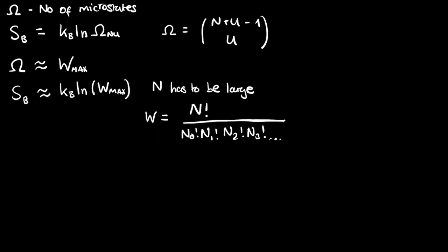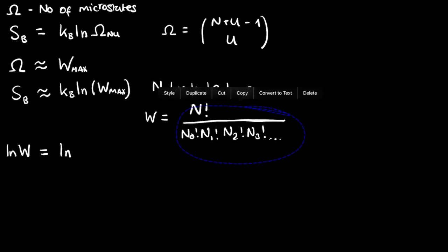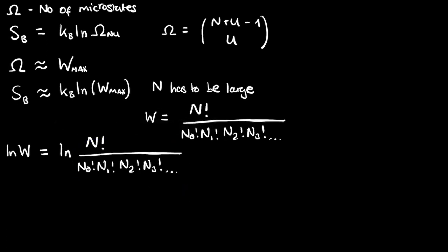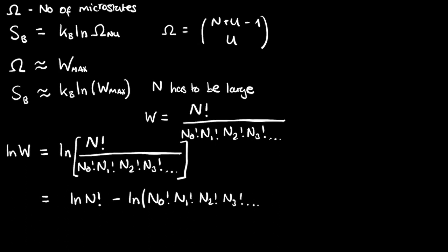So why not substitute our formula for W into the Boltzmann formula? I'm going to forget about the Boltzmann constant for now and simply take the log of W. I'll sub it back in later. So taking the log of W, I just put this whole expression inside the natural log. Using log laws, this equals the log of N factorial minus the log of all the other terms: n0 factorial, n1 factorial, n2 factorial, n3 factorial, and so on.